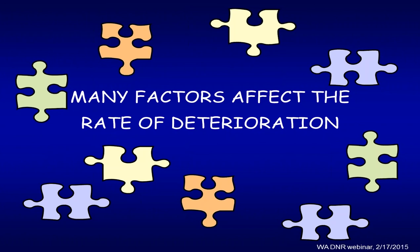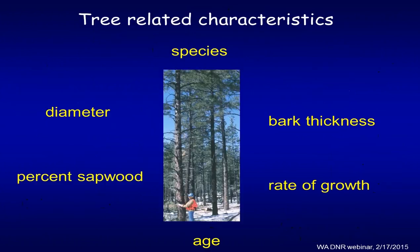Many of those factors are related to the tree itself. If we're looking at species and we have a ponderosa pine tree, they tend to have a lot of sapwood and pretty thick bark. You could have a fast-growing large diameter tree that will deteriorate faster than a slow-growing smaller tree because of the rate of growth and the moisture content.